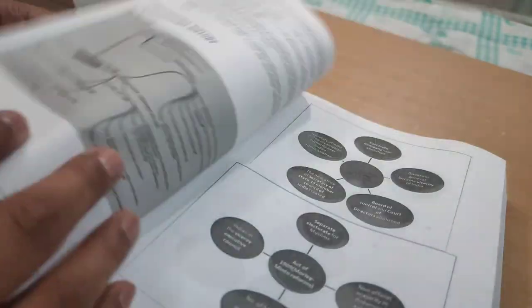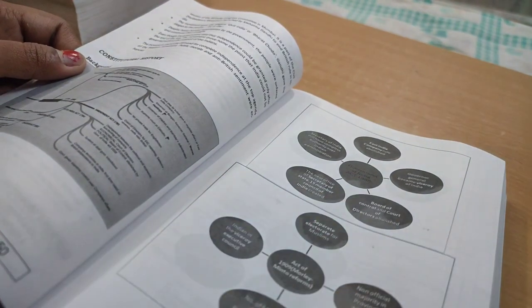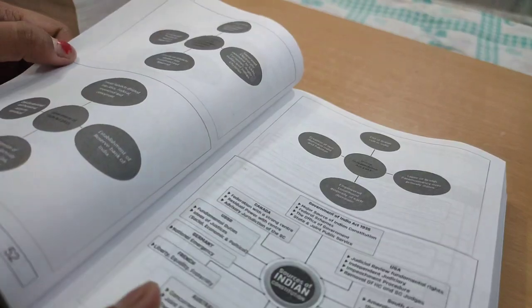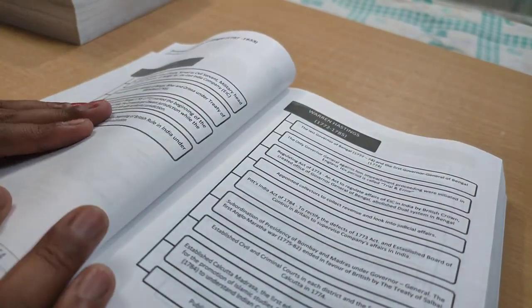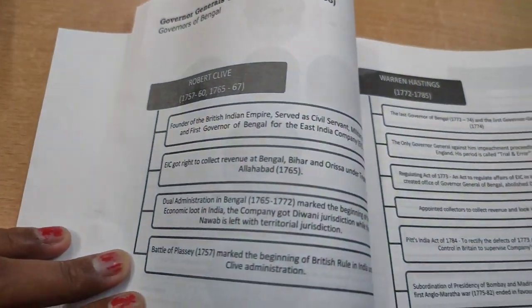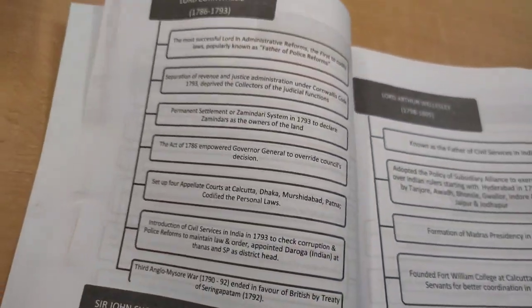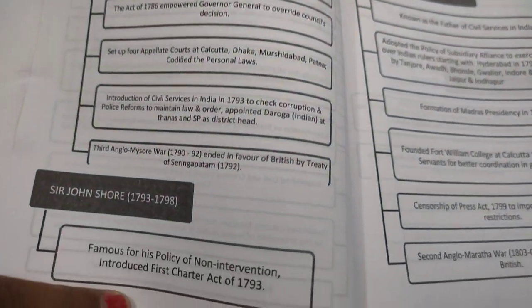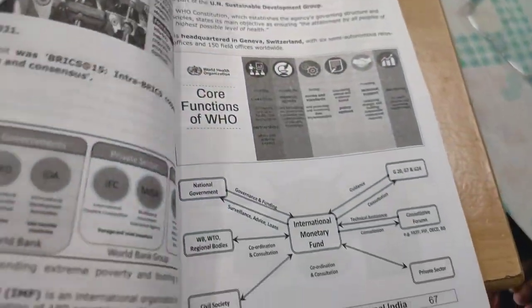Wonderful maps of the Constitution are also given, showing how the Constitution evolved through various stages — the Regulating Act, Pitt's India Act, Charter Act — all explained through mind maps. You can see pages covering Robert Clive, Warren Hastings, and the major events during their time. I really found this book great. If you want to buy it, the link is in the description.